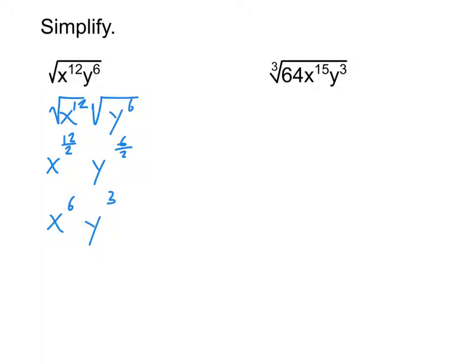In the second example, we're taking the cube root of 64, the cube root of x to the 15th, and the cube root of y cubed. So what is the cube root of 64? In other words, what number times itself three times equals 64? This is actually on the list of terms to memorize because it comes up often enough. The answer is 4.